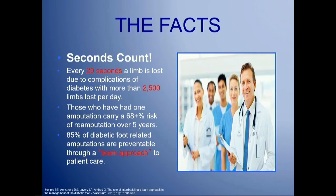The facts: it's really important that we understand what we're dealing with here and that seconds do count in this patient population. Every 20 seconds a limb is lost secondary to complications of diabetes, with more than 2,500 limbs lost per day — an astonishing number. Those who have had an amputation carry approximately a 70% risk of re-amputation over the next five years without changes in diet, lifestyle, and overall habits. 85% of those diabetic foot-related complications have been found to be preventable through a team approach.